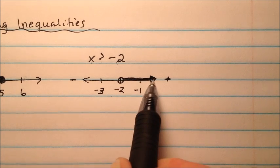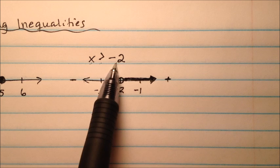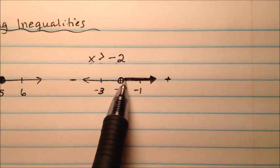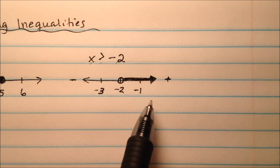And then kind of fill in all these values right here. So we're saying in this one, x is greater than negative 2. So open a circle at negative 2, with a line extending indefinitely to the right.